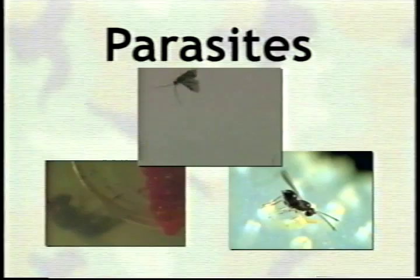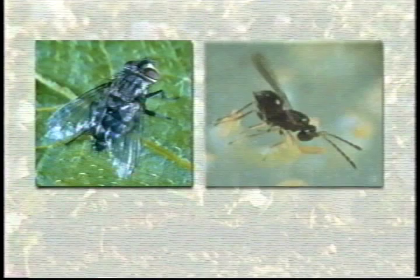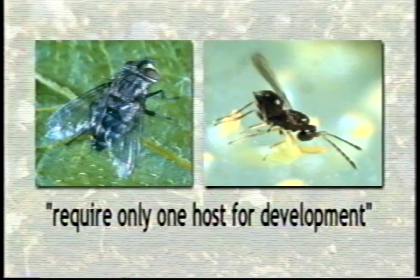Parasites are the second group of natural enemy commandos doing battle for the farmer. Many parasites in cotton are either flies or tiny wasps. Parasites are different from predators in that parasites require only one host for development. Also, while predators attack many different kinds of insects, parasites usually zero in on only one species of pest.